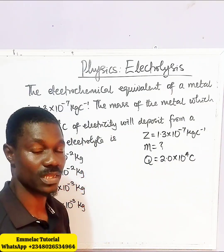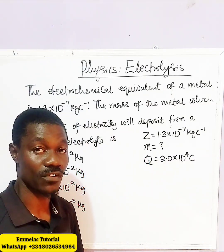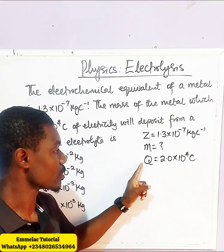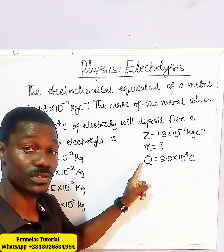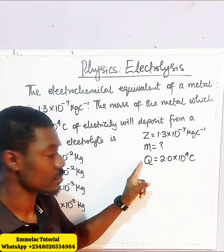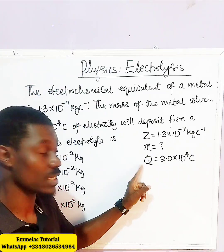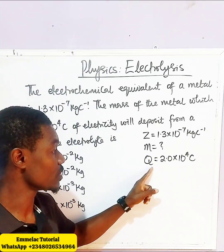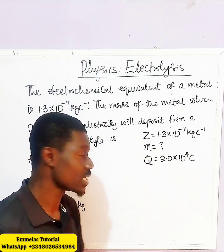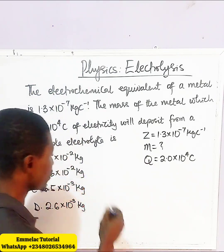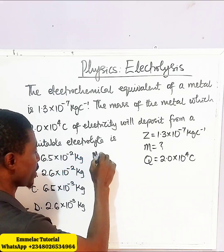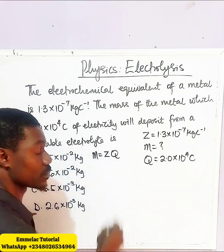The next thing is to record the formula that gives us the relationship between the quantity of electricity, the mass, and the electrochemical equivalent. That relationship is given by M equals Z times Q.